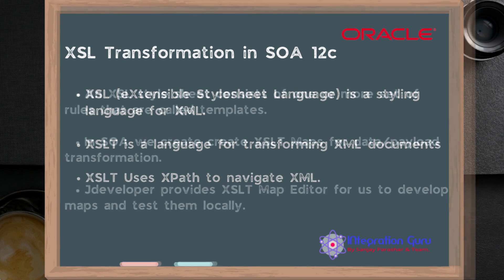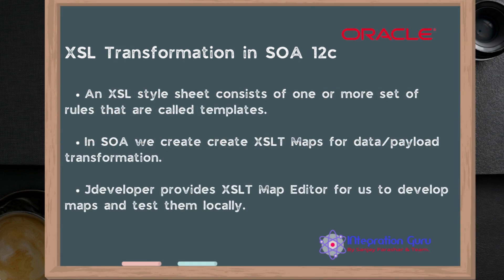In XSLT, a stylesheet contains one or more set of rules, and they are called templates. All these basics are already covered in the SOA tutorial playlist, so if you have not seen that I would really appreciate if you can go ahead and check those out. In SOA we create XSL maps in order to transform a source schema or source elements to a target schema or target element.